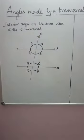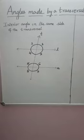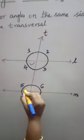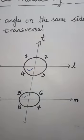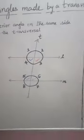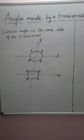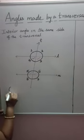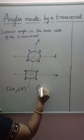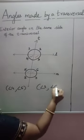So there are two pairs of interior angles on the same side of the transversal. That is 4 and 5 and 3 and 6. So the two pairs of interior angles on the same side of the transversal are angle 4 and angle 5, angle 3 and angle 6.